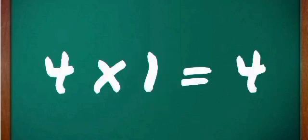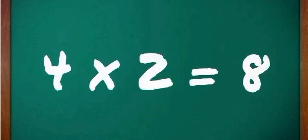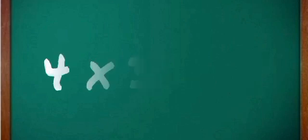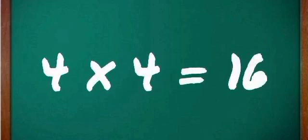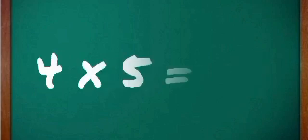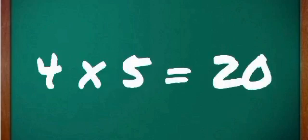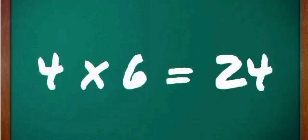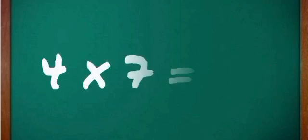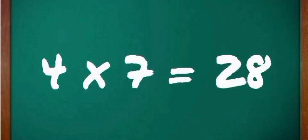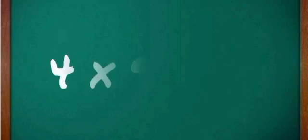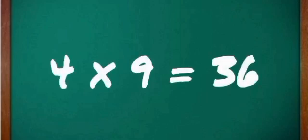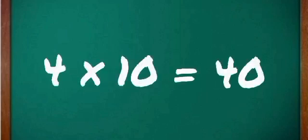4 one's are 4, 4 two's are 8, 4 three's are 12, 4 four's are 16, 4 five's are 20, 4 six's are 24, 4 seven's are 28, 4 eight's are 32, 4 nine's are 36, 4 ten's are 40. Okay, now 5.